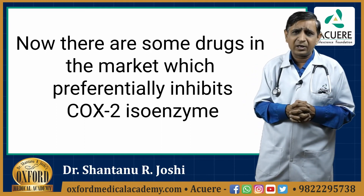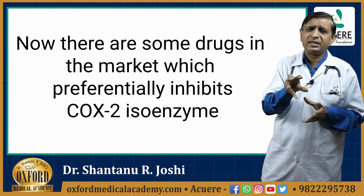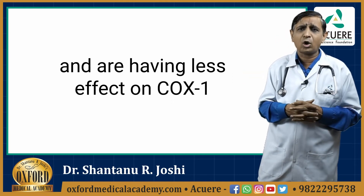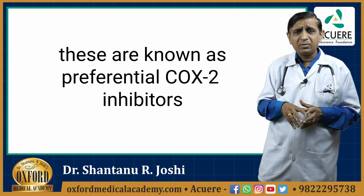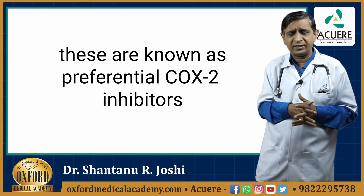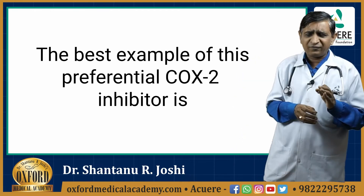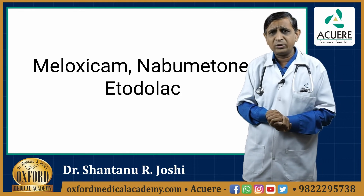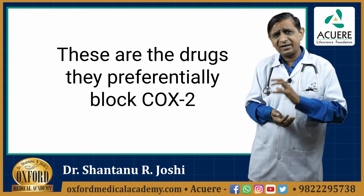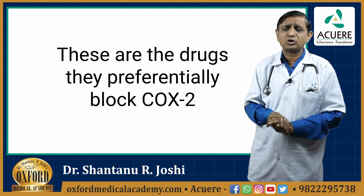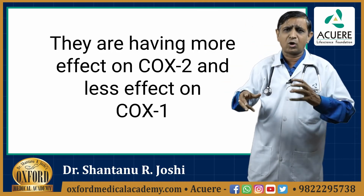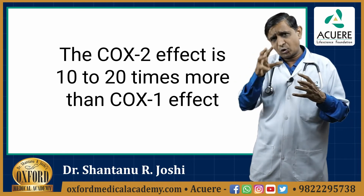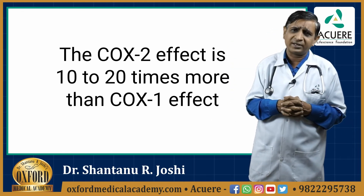There are some drugs in the market which preferentially inhibit the COX-2 isoenzyme and have less effect on COX-1. These are known as preferential COX-2 inhibitors. The best examples are meloxicam, nabumetone, and etodolac. These drugs preferentially block COX-2, with their effect on COX-2 being 10 to 20 times more than their effect on COX-1.